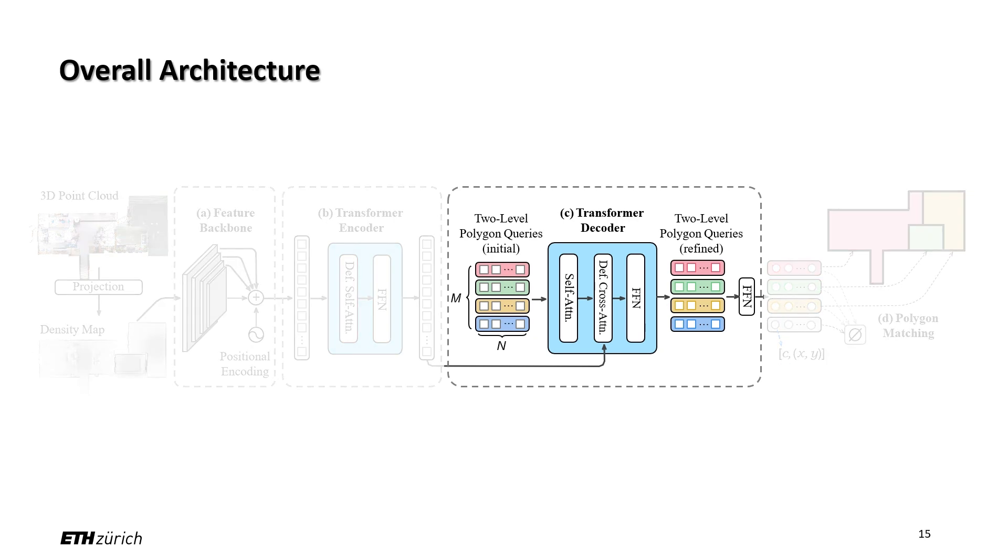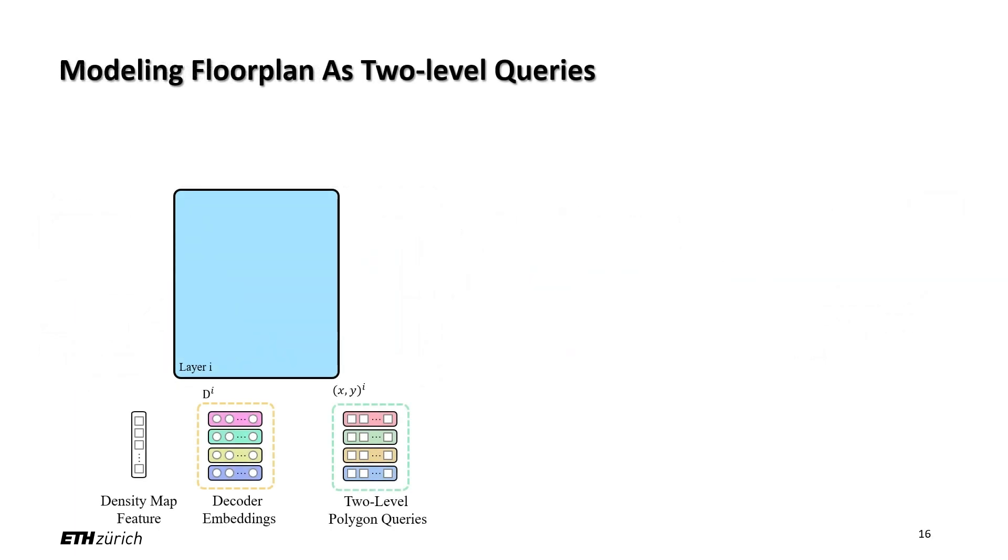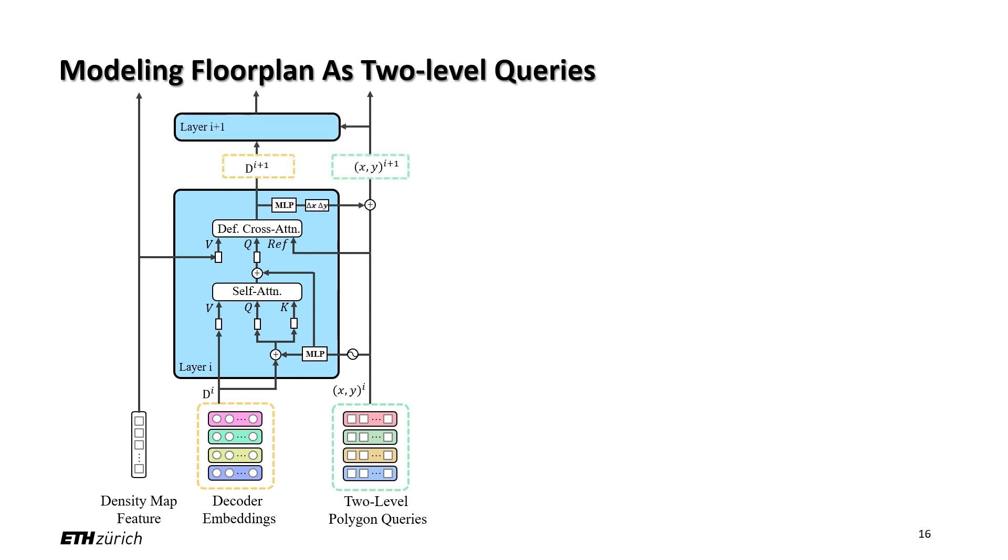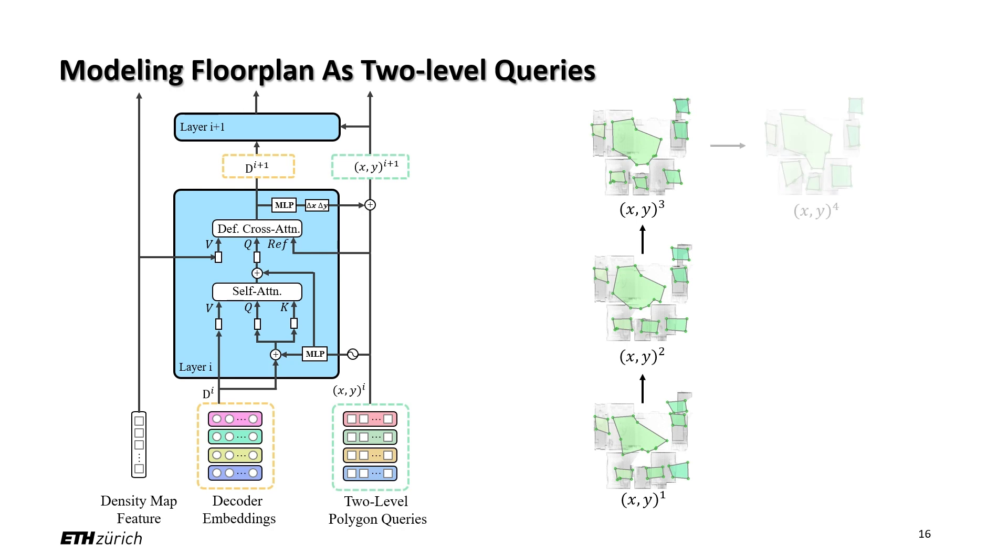Let's check our key components in more detail. One is the transformer decoder. In the decoder, the polygon queries first interact with each other through a self-attention module. Then, in a deformable cross-attention module, the polygon queries attend to different regions of the density map. In addition, we directly learn altered corner coordinates as queries and refine them iteratively after each layer. This refinement process encourages polygon queries to gradually converge to outline the floor plan structure.